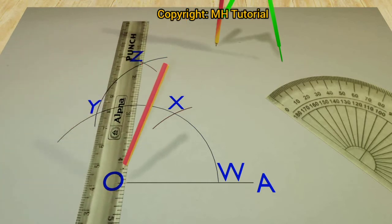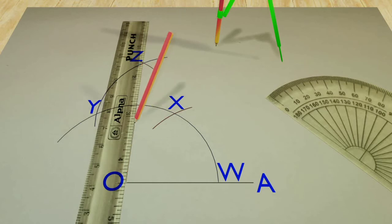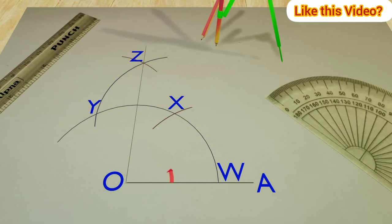Then with the help of a scale, a line segment is drawn from point O to point Z. This line segment may be named OP, so the angle AOB is a 90-degree angle.